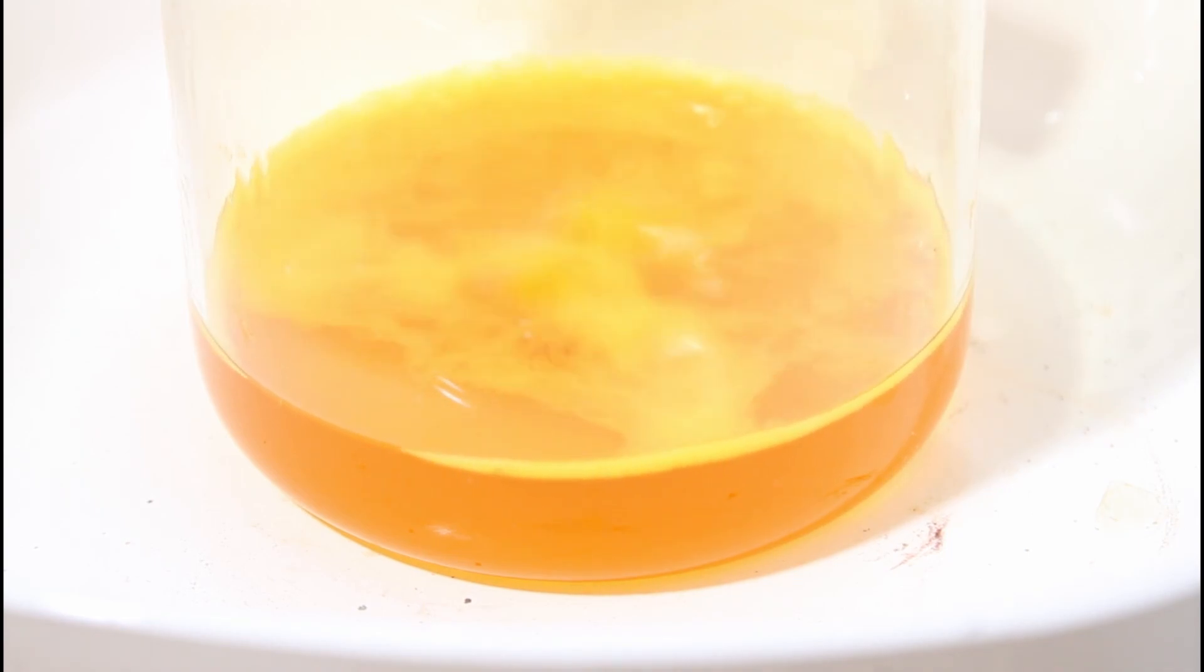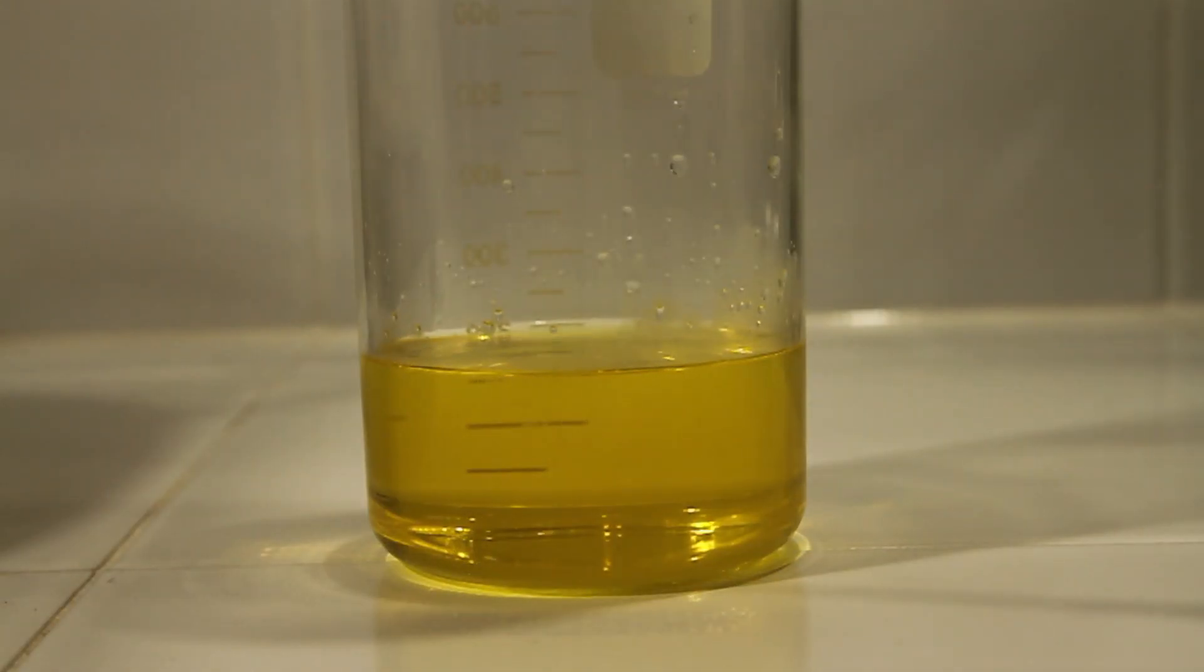Now after we take it off the heat and let it cool, we're going to add a chemical called sodium metabisulfite. It can be purchased at Ace Hardware, it's Stump Out.